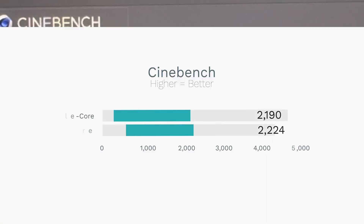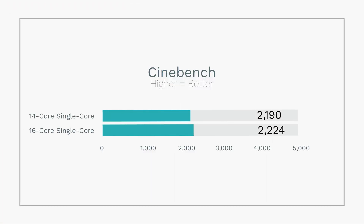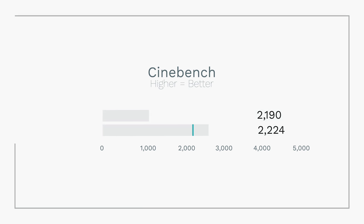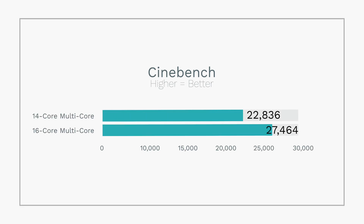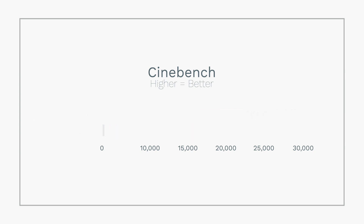Our Cinebench results are in. For multi-core, the 14-core scored 22,836 and single-core scored 2,190. On the 16-core, multi-core came in at 27,464 and single-core at 2,224.